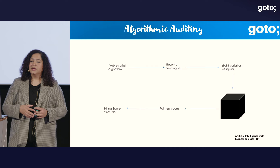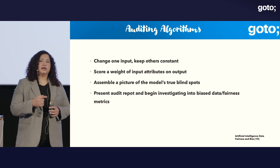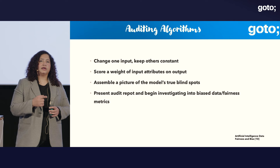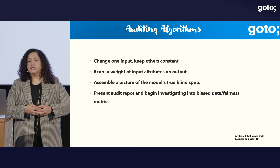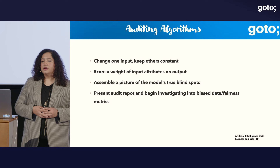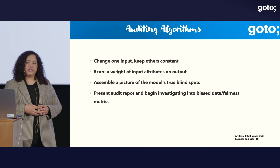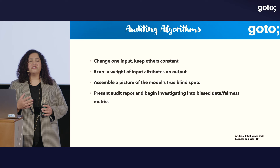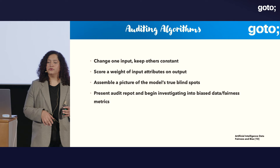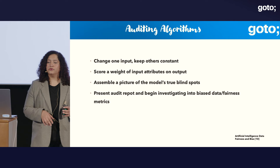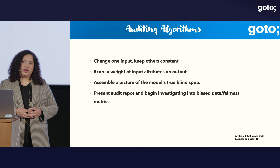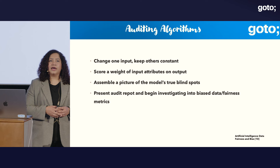This technique is called algorithmic auditing. When auditing an algorithm, there are four rules to follow: first, change one input and keep others constant; second, score a weight of input attributes and outputs to identify which input is creating the most drastic effect; third, assemble a picture of the model's blind spots; and fourth, present the audit report and begin investigating biased data or fairness metrics, then take measures for the future.